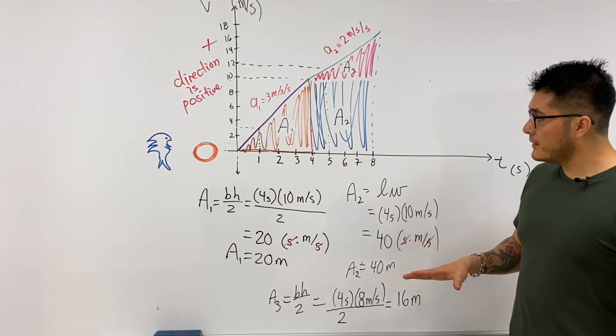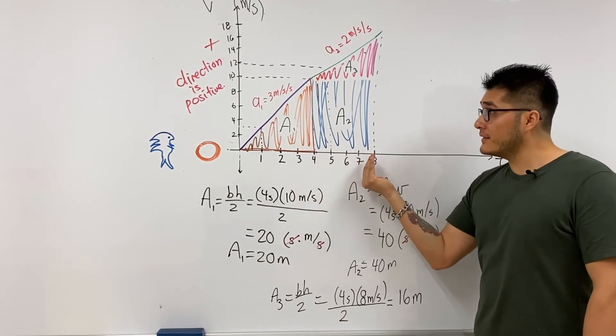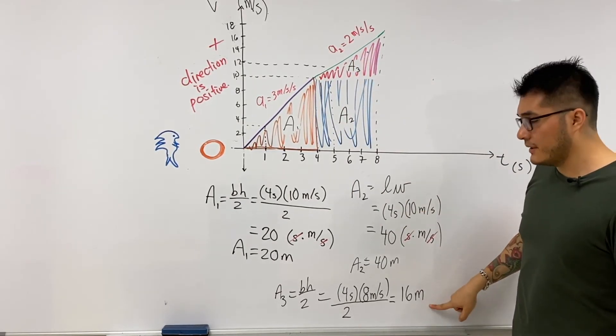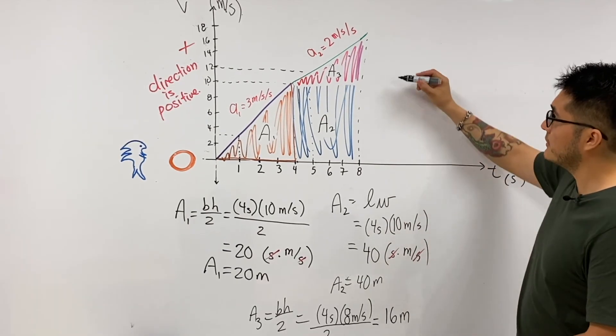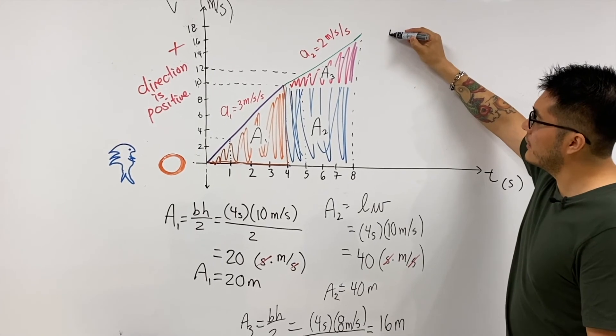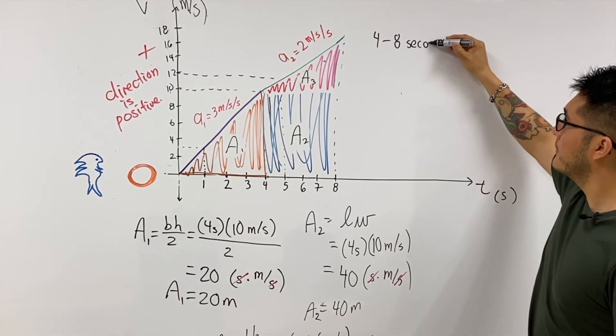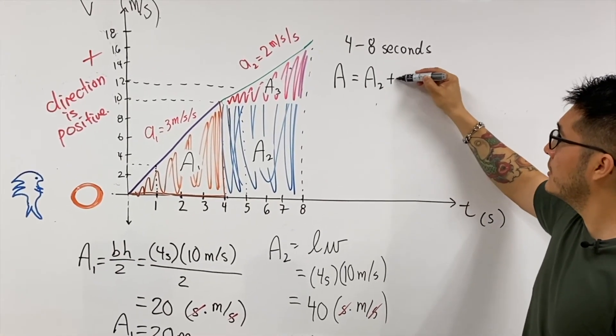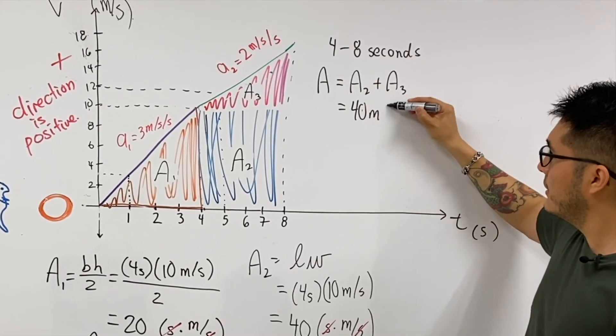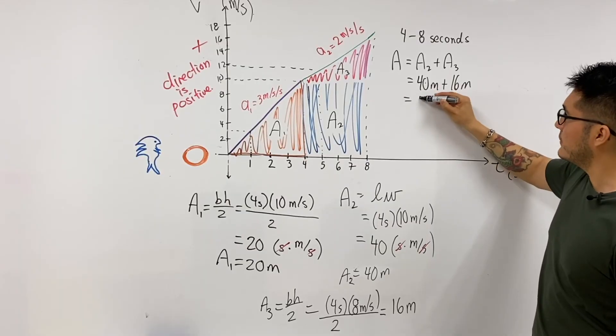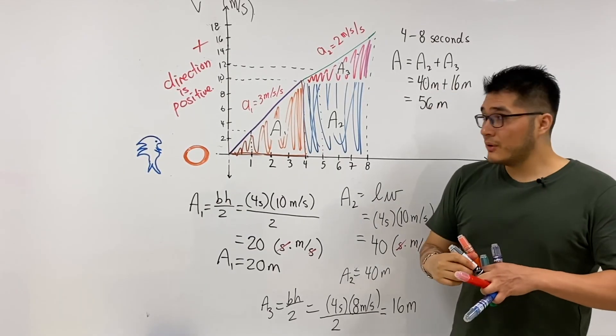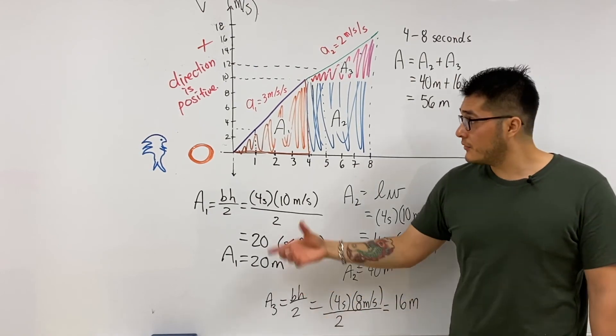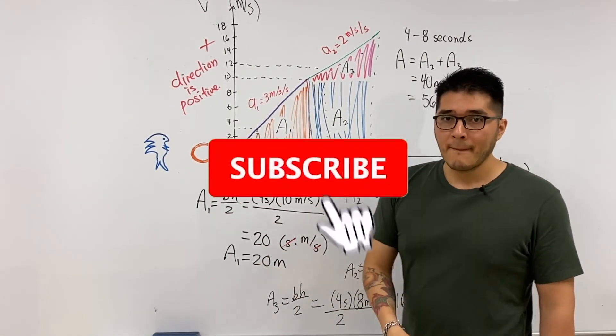Then we can combine this into thinking all right, from four seconds to eight seconds, the whole area is going to be area two plus area three, which is going to be 40 plus 16, which is 56 meters. So Sonic from the second motion piece here has displaced 56 meters and the first four seconds 20 meters.